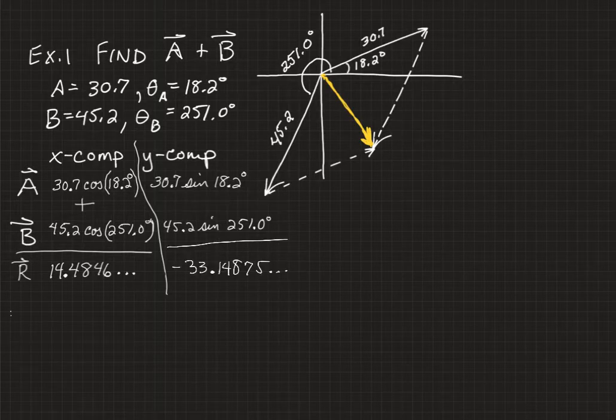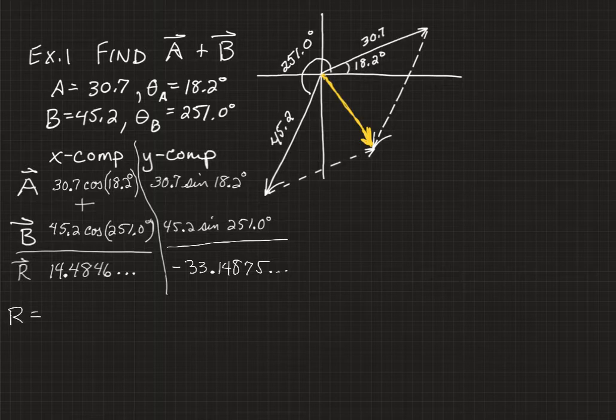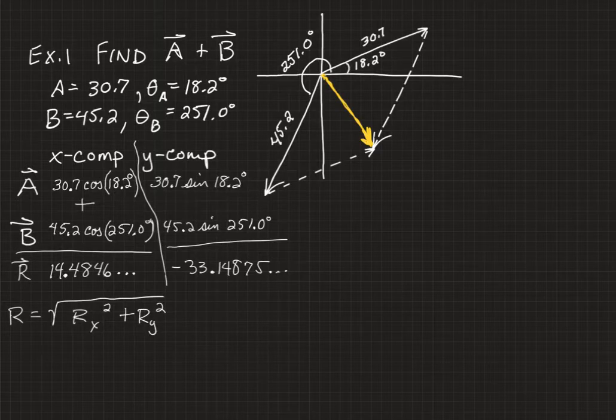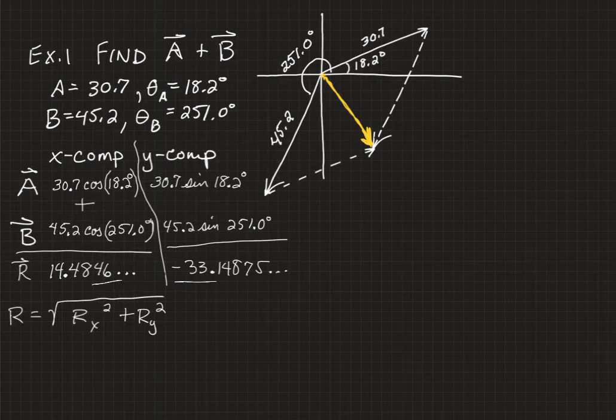And to find the magnitude of the resultant vector, we would take the square root of R sub x squared plus R sub y squared. At this point, rather than introducing rounding error by using approximate numbers like we have here and here,